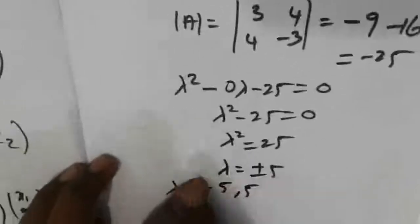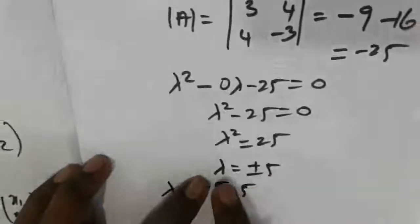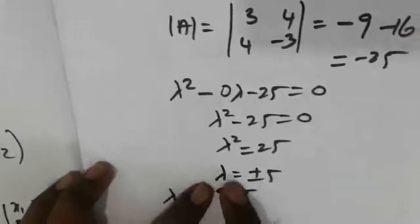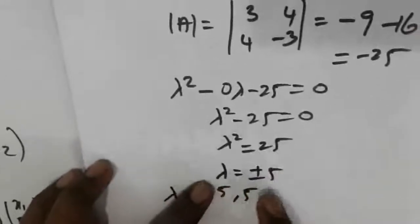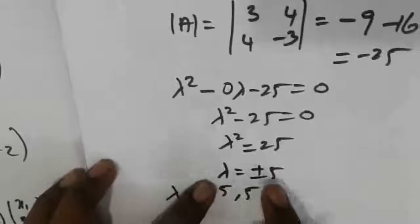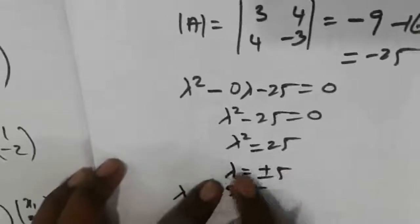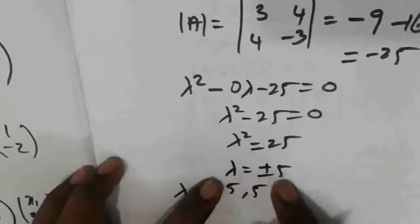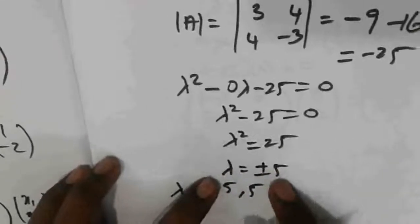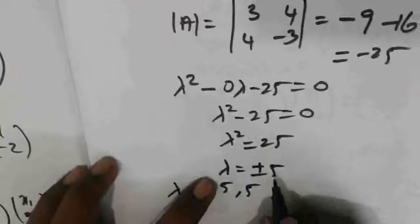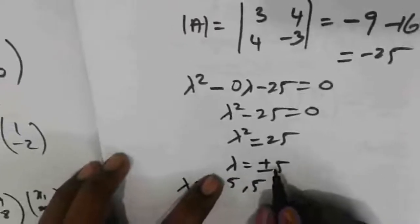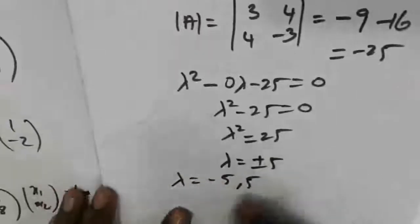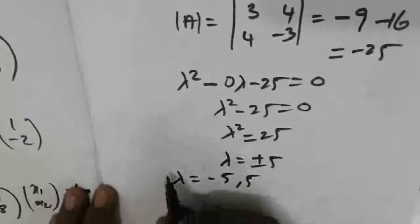Lambda squared minus 25 equals zero, plus 25. So lambda equals square root of 25, which is plus or minus 5. That means the eigenvalues are plus 5 and minus 5.